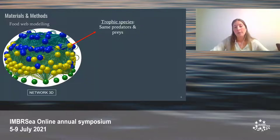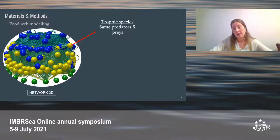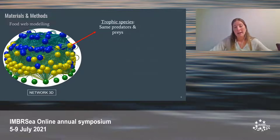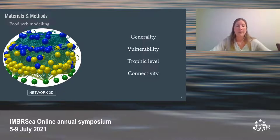For the food web modeling before and after the introduction of non-indigenous species, two matrices were created with all the predator-prey links. They were introduced into the software Network3D, which creates a visual representation of the food web network by grouping species with the same predators and prey into nodes. It also calculates the properties of the network. In total, 18 properties were calculated, but these four were examined in more detail.